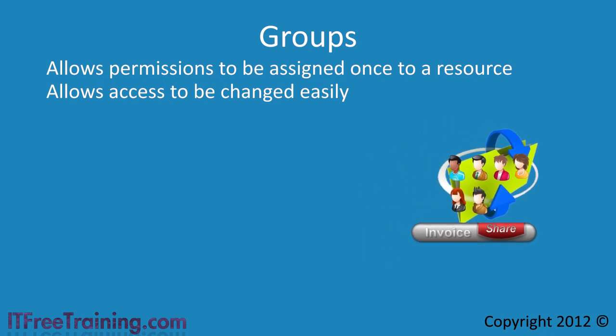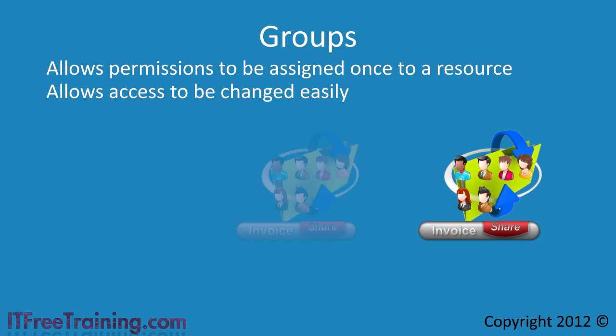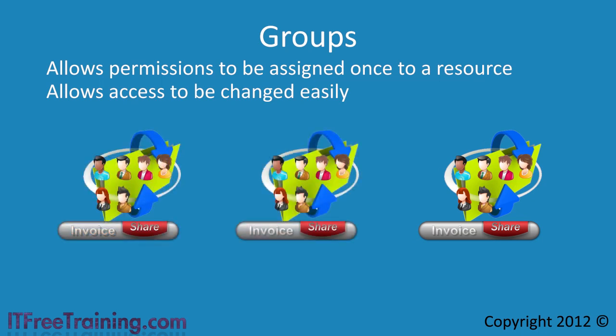Now consider that you have multiple offices around the country and each office has a server with an invoice share on it. Each time a new user requires access or access needs to be removed, the permissions on each share on each server needs to be modified. This requires the administrator to know every server that has an invoice share on it and requires them to make changes on each one.